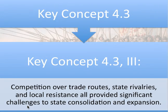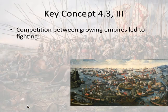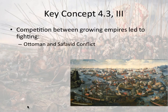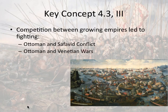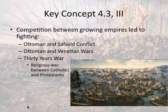Key concept 4.3, Roman numeral 3 says competition over trade routes, state rivalries, and local resistance all provided significant challenges to state consolidation and expansion. As these places expanded, they competed with and fought one another. You're going to see conflicts between the Ottomans and the Safavids in what we would now consider the Middle East — the Ottomans were able to overcome that conflict and came out victorious. You also see fights between the Ottomans and the Venetians, who initially had a positive trade relationship, but as one side got too greedy, relations broke down into a series of wars the Ottomans won. The Thirty Years' War was a particularly gruesome conflict waged between 1618 and 1648 in Europe, one of the results of the Protestant Reformation — a religious war between Protestants and Catholics that really had no winner.